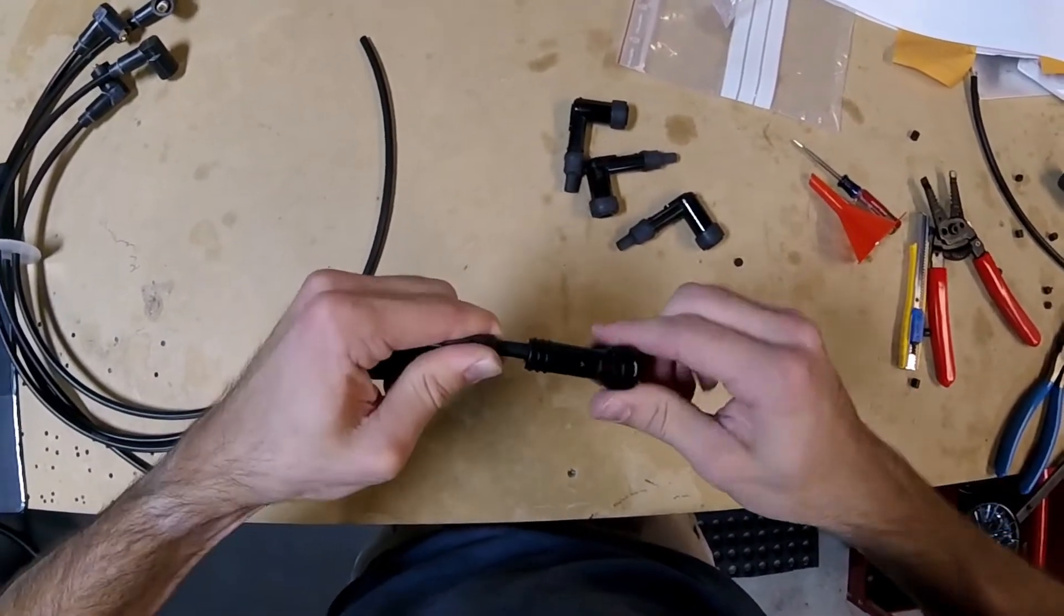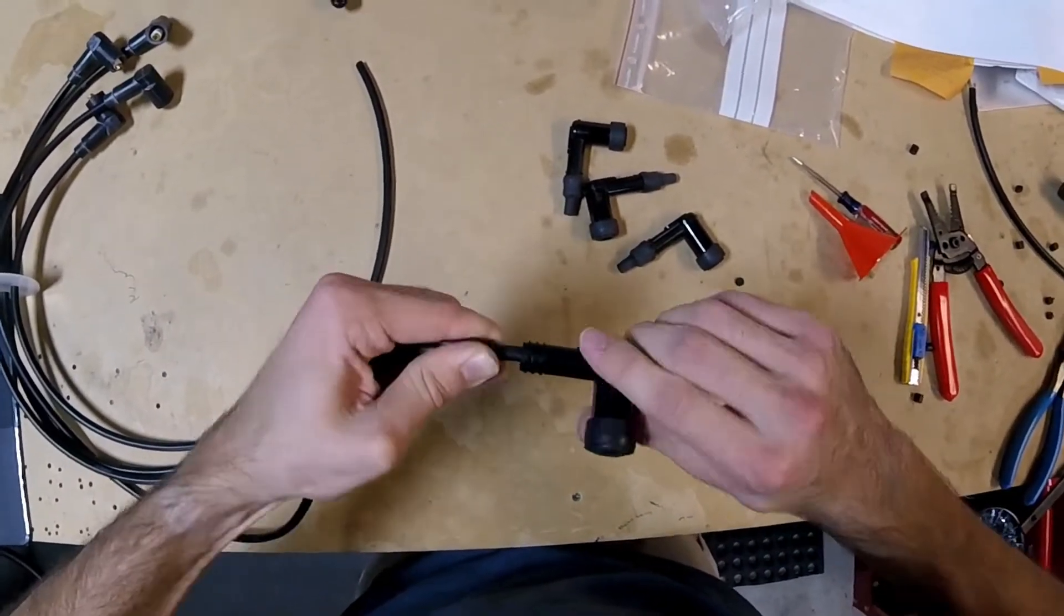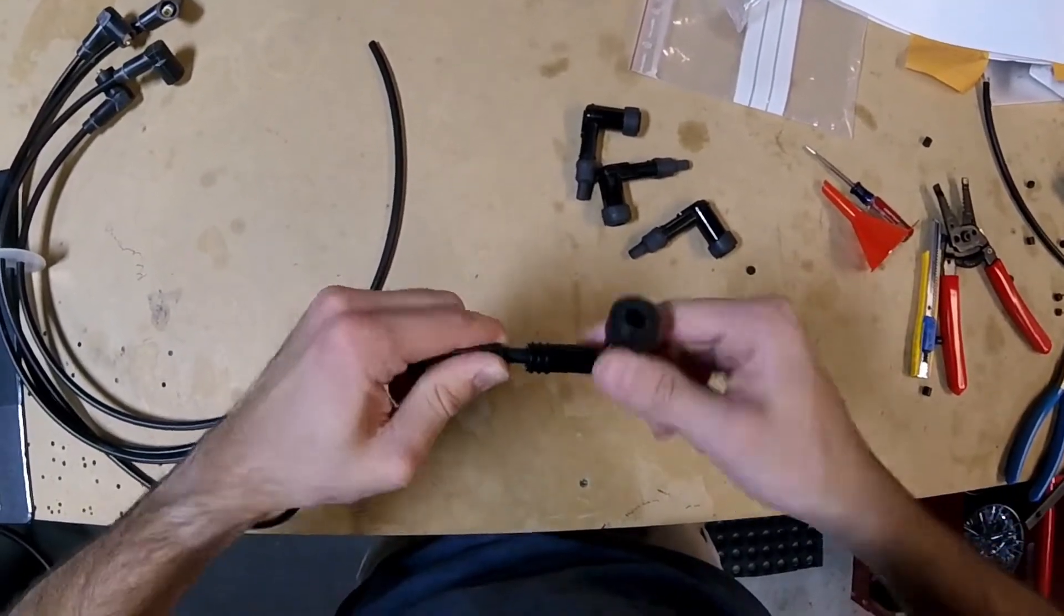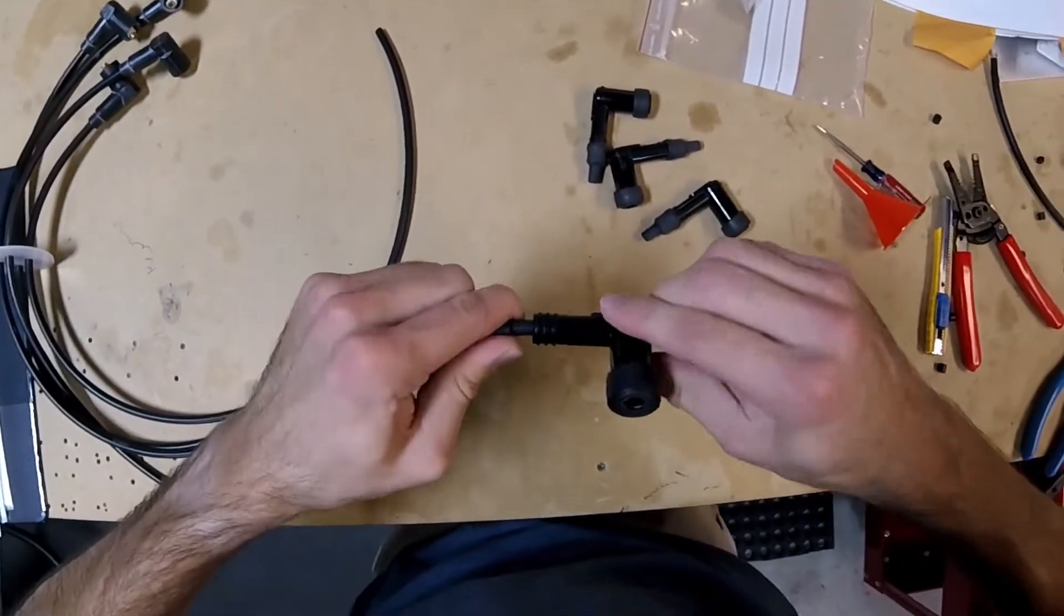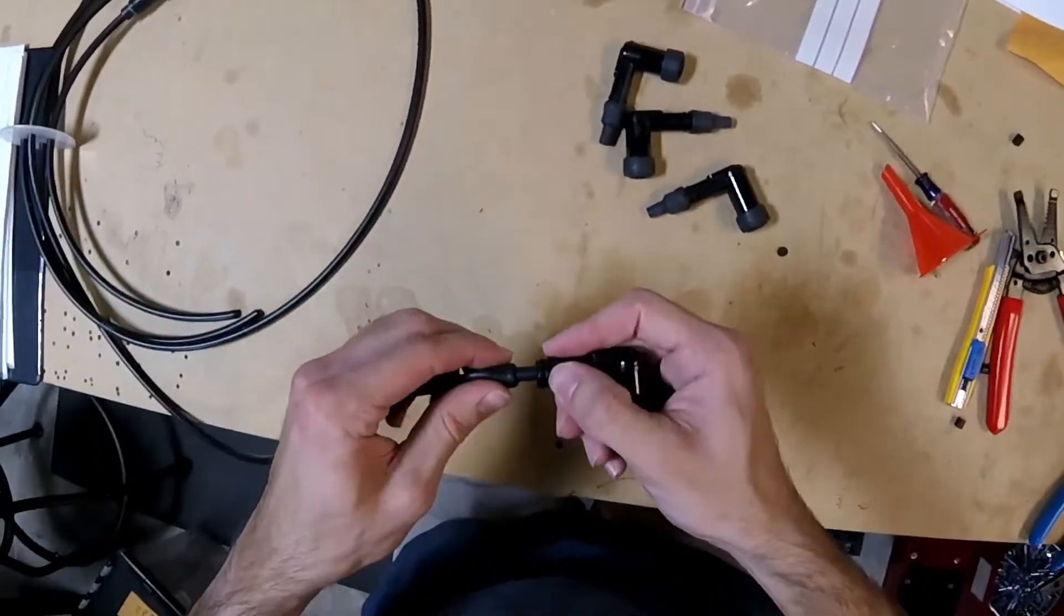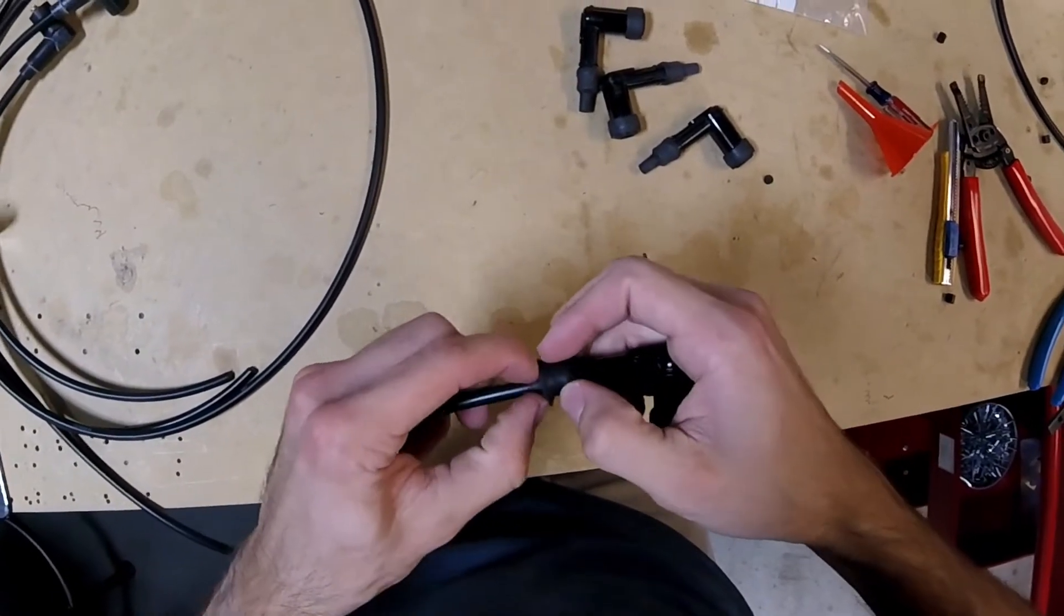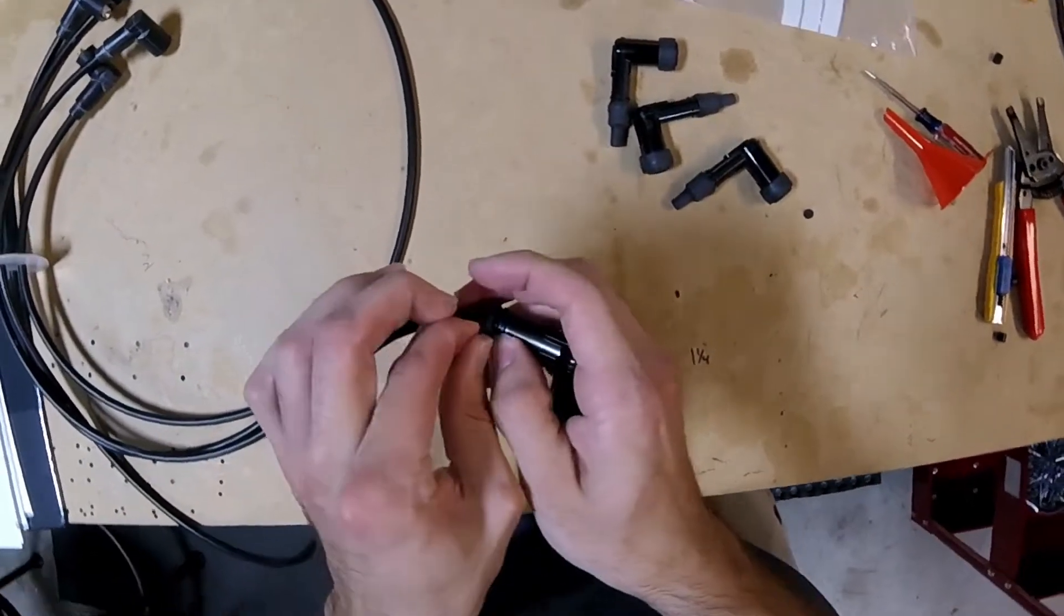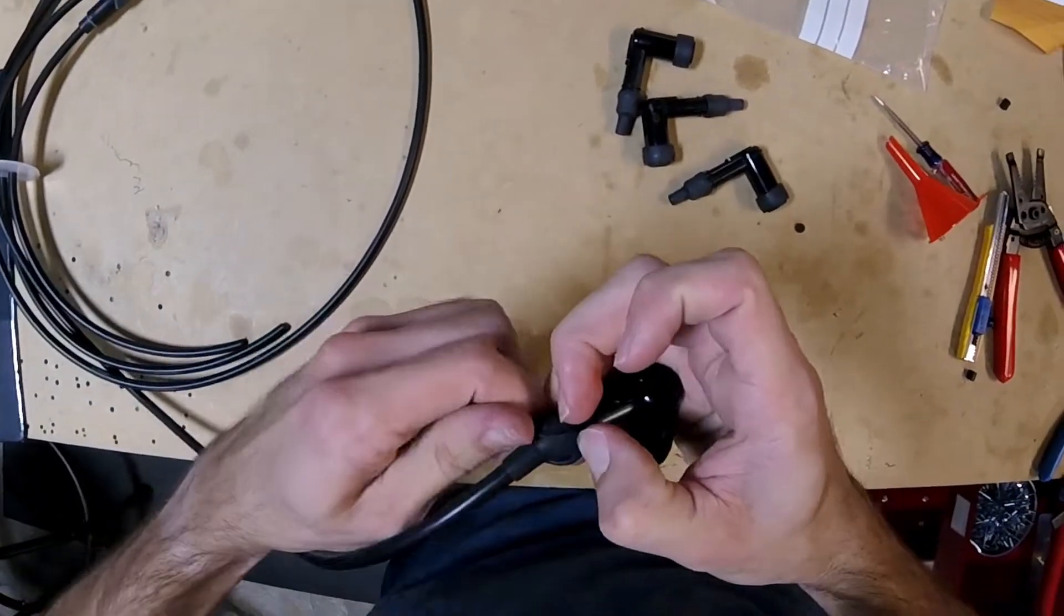Once the connector seems like it's pretty much bottomed out, once you just start turning the lead here, once it just starts to twist and you don't really have any more downward movement of the connector, right about there, you can just feel it's like bottomed out. Then take the boot and slide it back over this connector here.